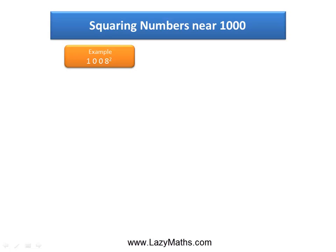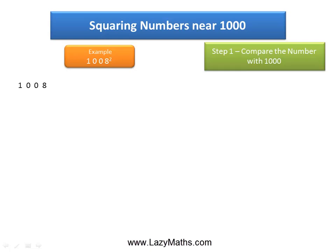Here's an example of squaring numbers near 1000: 1008 squared. The first step is to compare 1008 with 1000. As we can see, 1008 is 8 more than 1000, so we call plus 8 as the difference.